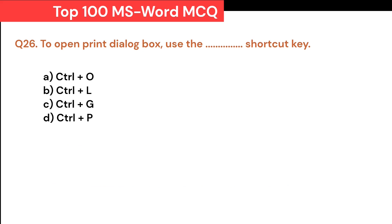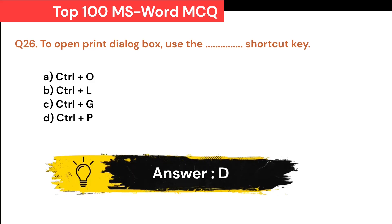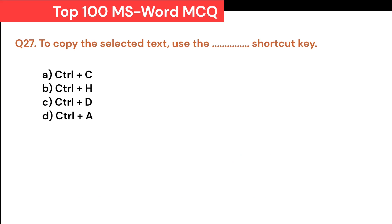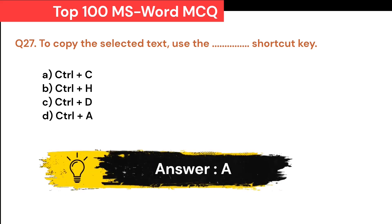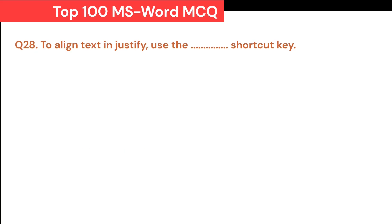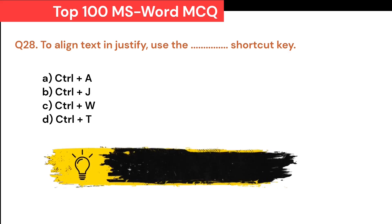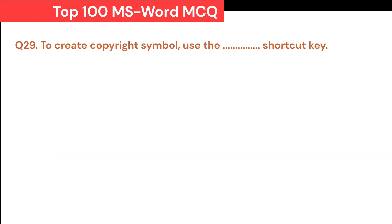To copy the selected text, use the Dash shortcut key: A. Ctrl+C. B. Ctrl+H. C. Ctrl+D. D. Ctrl+A. Correct answer is A. Ctrl+C. To align text to justify, use the Dash shortcut key: A. Ctrl+A. B. Ctrl+J. C. Ctrl+W. D. Ctrl+T. Correct answer is B. Ctrl+J. To create a copyright symbol, use the Dash shortcut key: